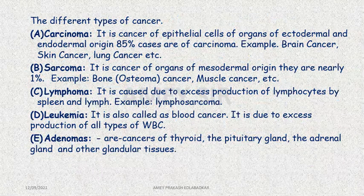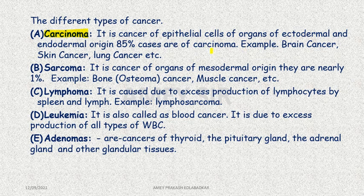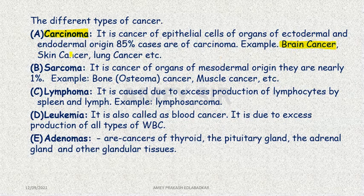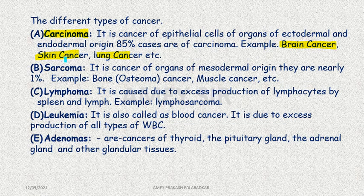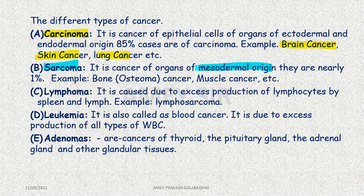Types of cancer: Carcinoma arises from epithelial cells of organs of ectodermal and endodermal origin — 85% of cancers are carcinomas, such as brain cancer, skin cancer, lung cancer. Second type is sarcoma, which develops in organs of mesodermal origin and in connective tissue.